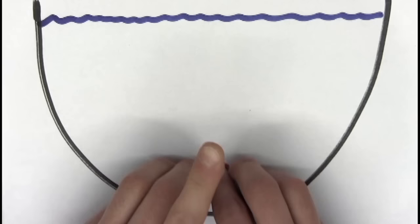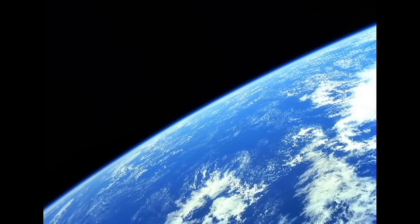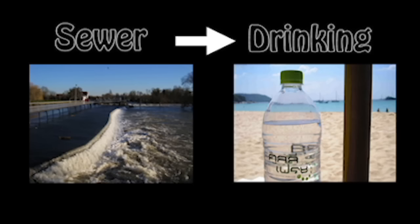Given how effective flocculation is, many countries around the world use this method for cleaning their water supplies. Did you know that Singapore, for instance, produces drinking water from sewer water using a number of methods including flocculation?